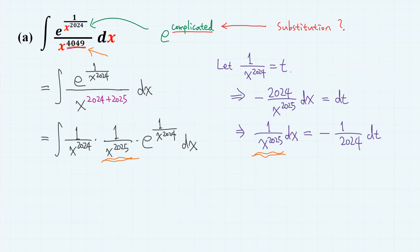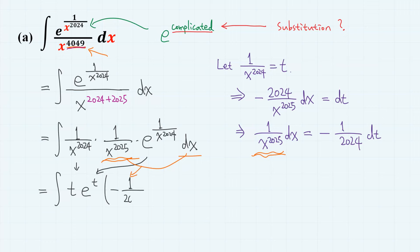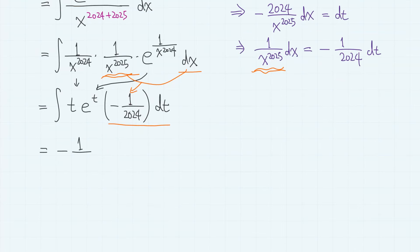So now we have 1 over x^2025. This 1 over x^2024 equals t, this e to the power of 1 over x^2024 equals e to the power of t, and this 1 over x^2025 dx equals minus 1 over 2024 dt. So we have minus 1 over 2024 times the integral of t e to the power of t dt.